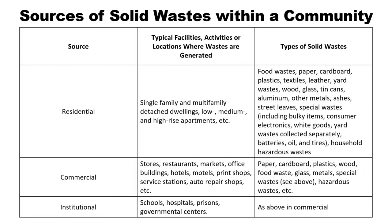These are the sources of solid waste within a community. As you can observe, we have here the typical facilities, activities, or locations where waste are generated, and the types of solid waste. For example, residential sources — coming from single-family and multi-family detached dwellings, low, medium, and high-rise apartments, etc. — generate food waste, paper, cardboard, plastics, textiles, leather, yard waste, wood, glass, tin cans, aluminum, other metals, ashes, street leaves, special waste, and household hazardous waste.